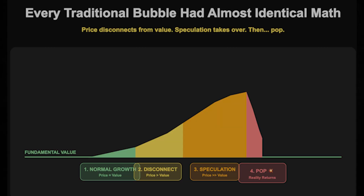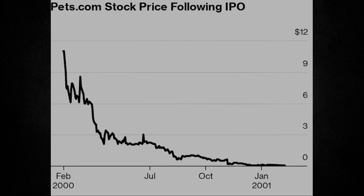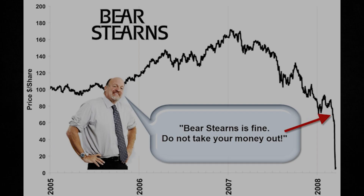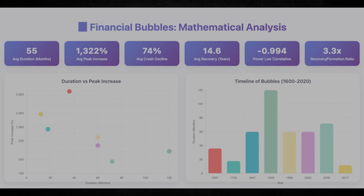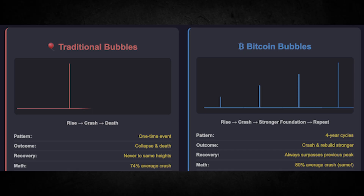Real bubbles follow a specific pattern. They inflate with speculation, then pop when reality hits. Think tulip mania in the 1600s, companies during the dotcom crash in 2001, or the housing bubble in 2008. I spent way too long studying every major bubble in history, analyzed the mathematical patterns based on historical data, and every traditional bubble had almost identical math: price disconnects from value, speculation takes over. Bitcoin follows the same bubble math, but repeats it on a schedule.